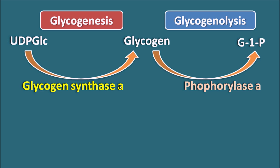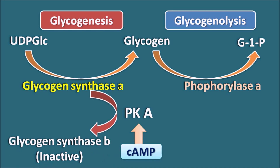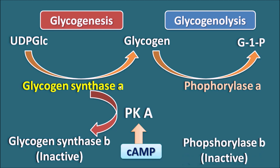Cyclic AMP increases the protein kinase A enzyme, which converts glycogen synthase A into glycogen synthase B, the inactive form of the enzyme. In this way, protein kinase A inhibits glycogenesis, that is the conversion of glucose to glycogen. At the same time, protein kinase A can convert the phosphorylase B enzyme, which is inactive, into its active form, phosphorylase A enzyme.